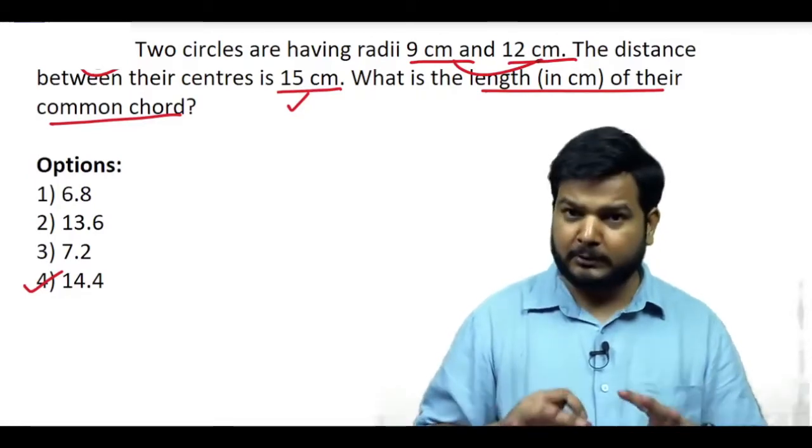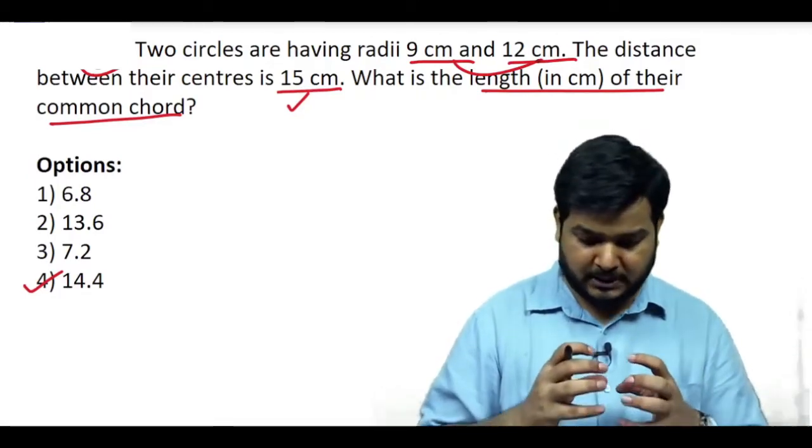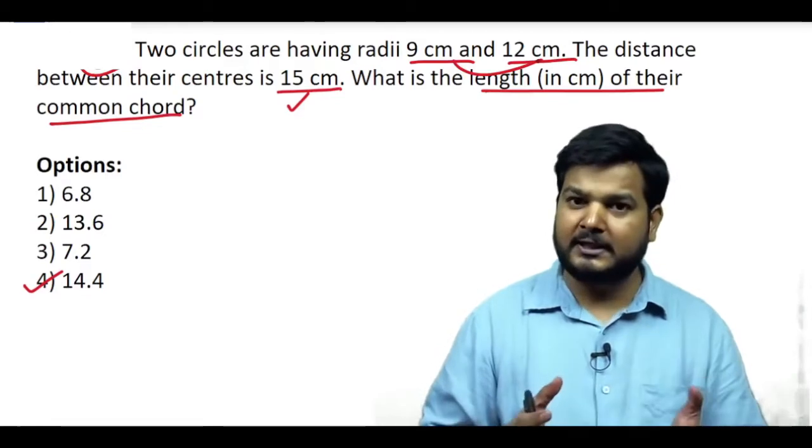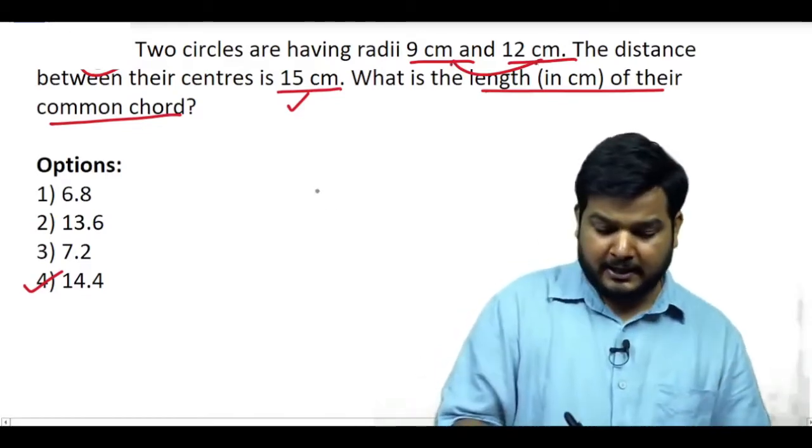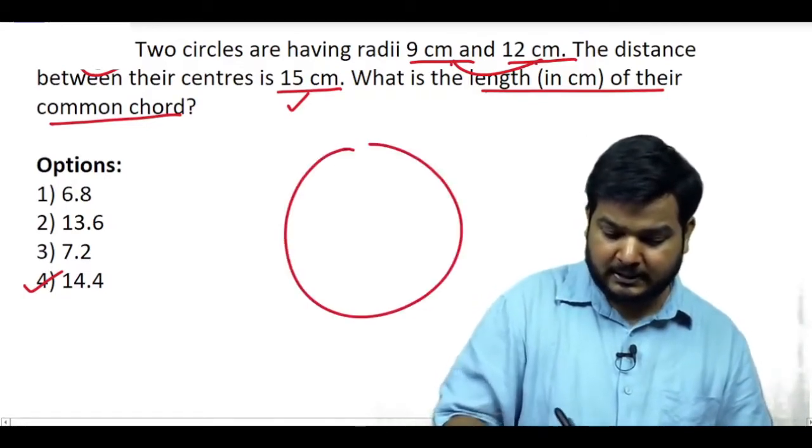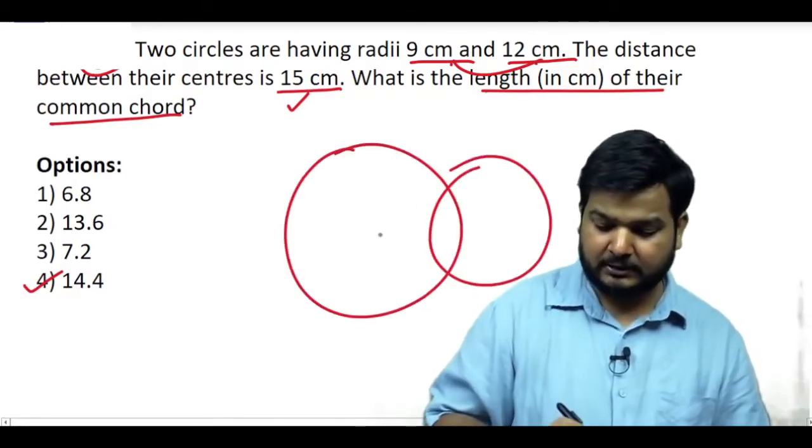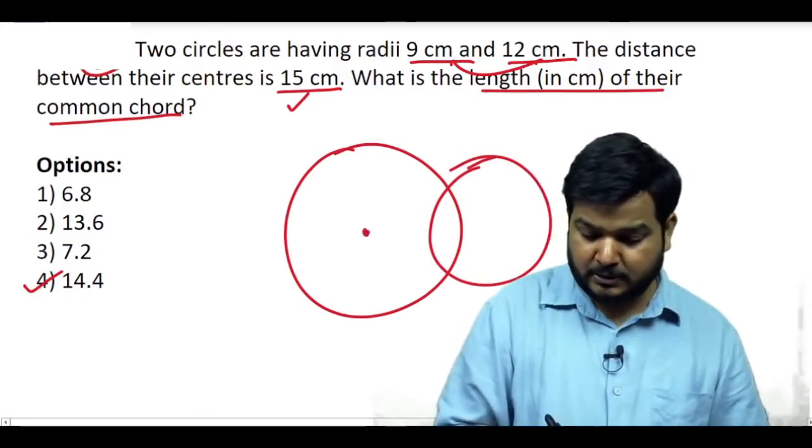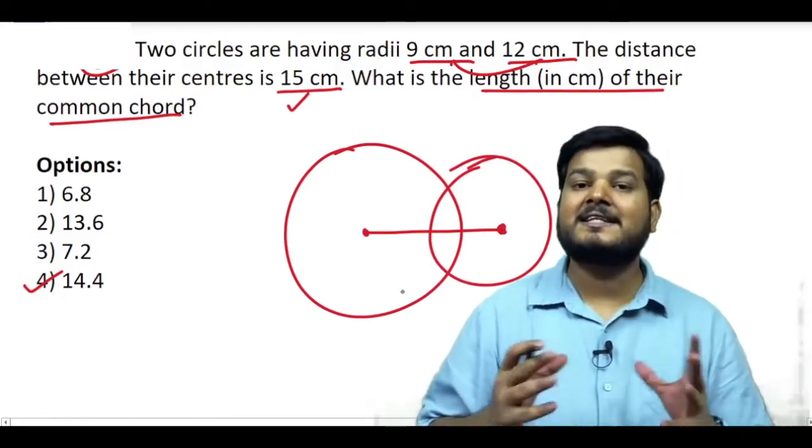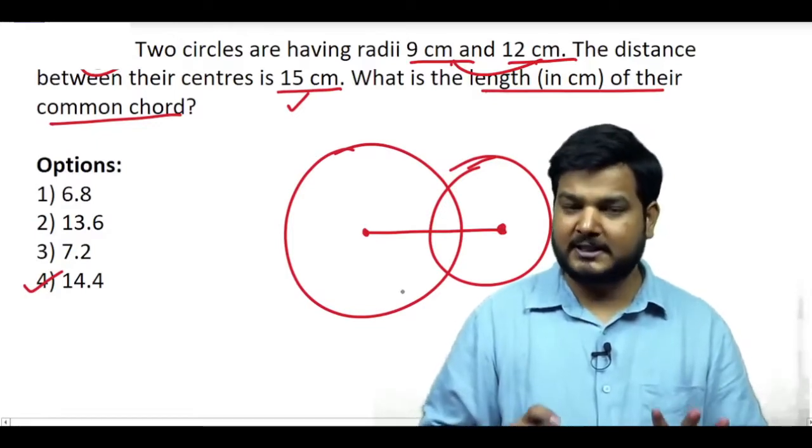Toh iska kya matlab hua? Yeh bohot important line hai ki centers ke beech ka jo duri hai wo keval 15 hai lekin agar unke radius ko jod liya jaye toh wo 21 ban raha hai. Iska matlab yeh hua ki yeh circle jo hai yeh ek dusare ko kuch aisa cut kar rahe honge tabhi aisa possible hai na ki centers ke jo beech ki duri hai wo radius ke sum se kam hai.